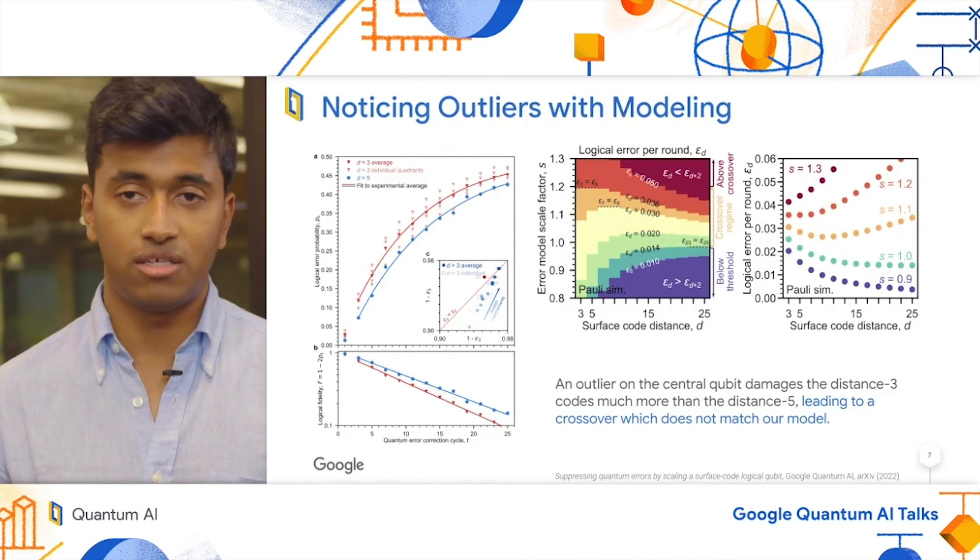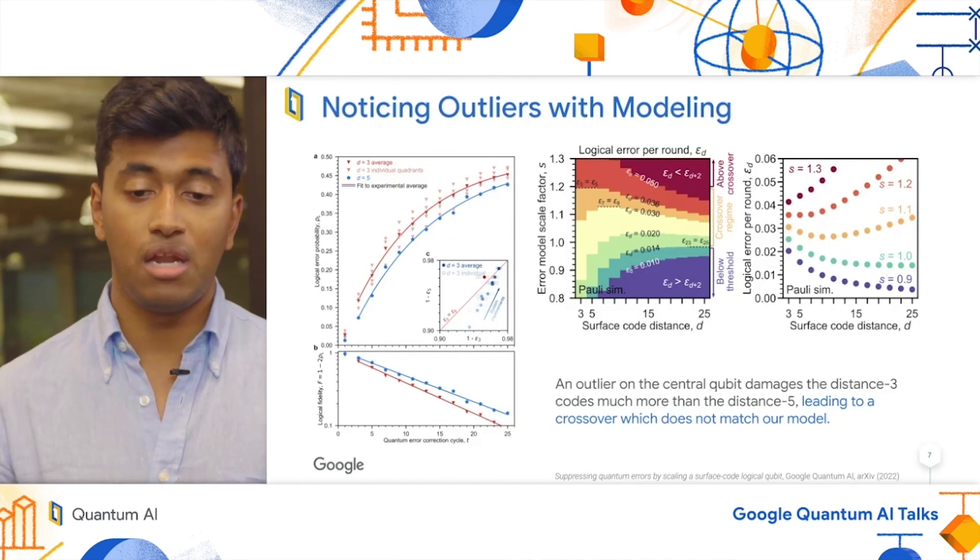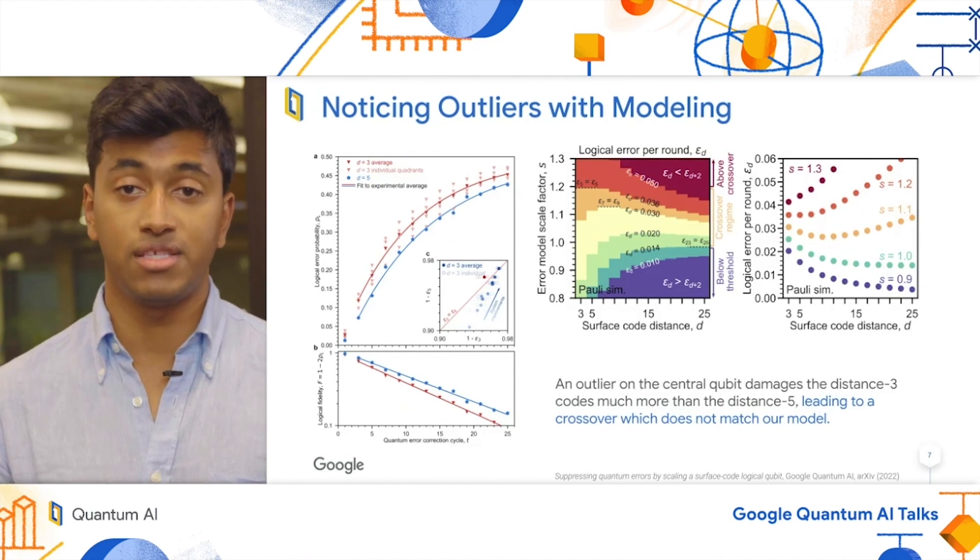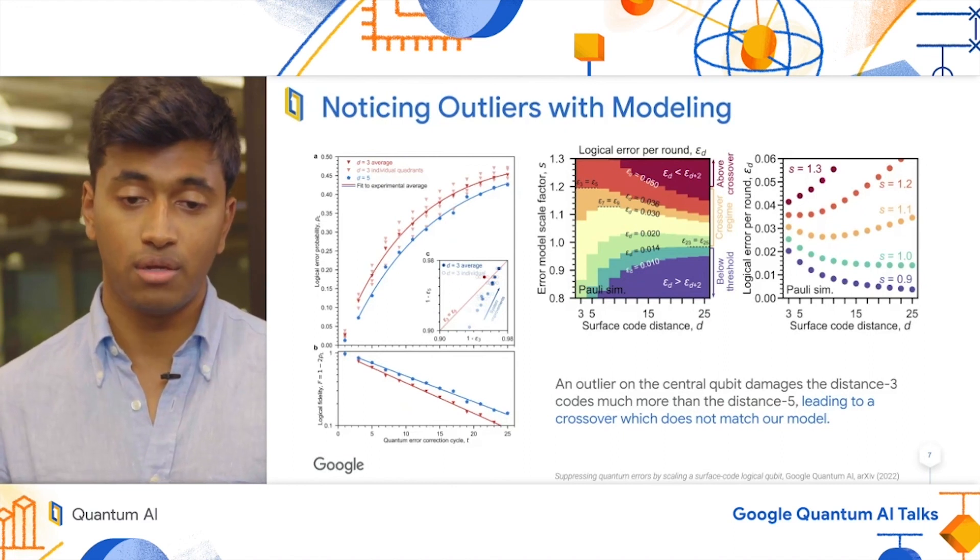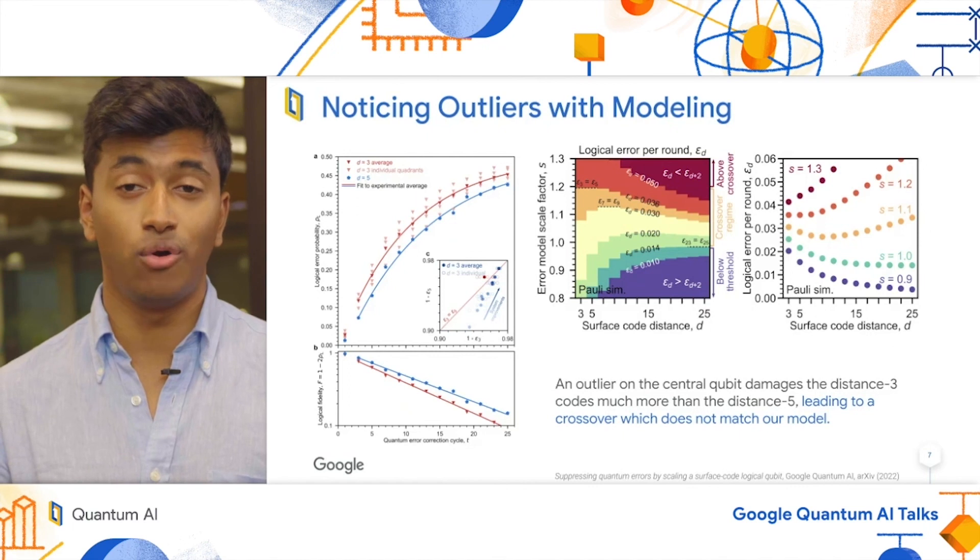We thought that because it doesn't match our model, something must have been up. And upon looking closer at the data, we could see there was a dramatic phase error on the central qubit in the grid. This central qubit is very important, as it touches all four distance 3 codes.